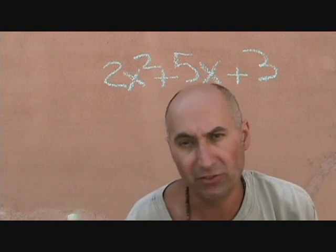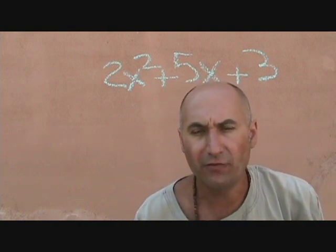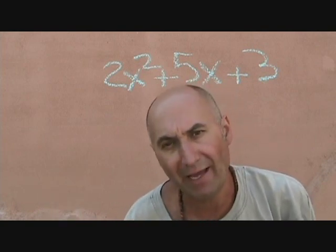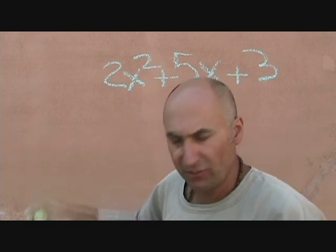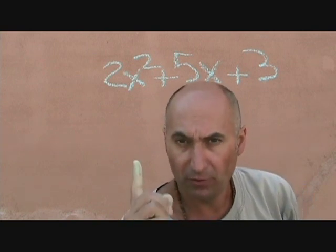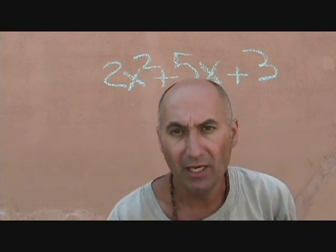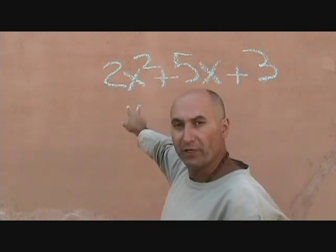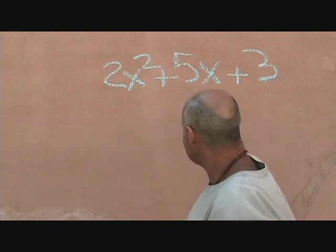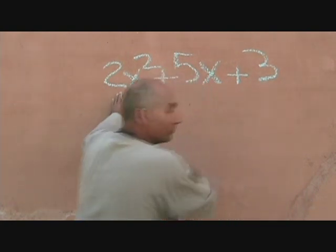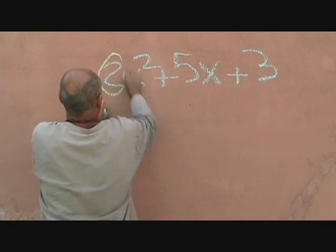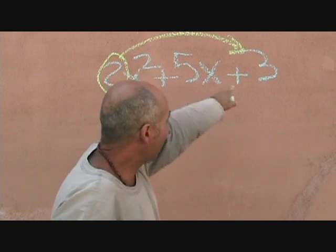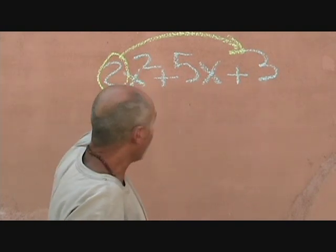So this is the way you end up factoring this. You can use the quadratic formula, but if it's easy, it's quicker to do things manually. So step number one for complex trinomial factoring: you take the 2 and multiply it by the 3, and that number replaces your c term, and you drop the 2 from in front of the x squared.